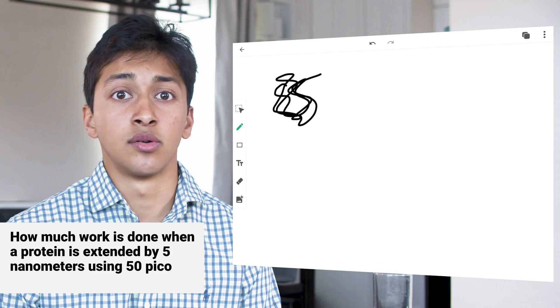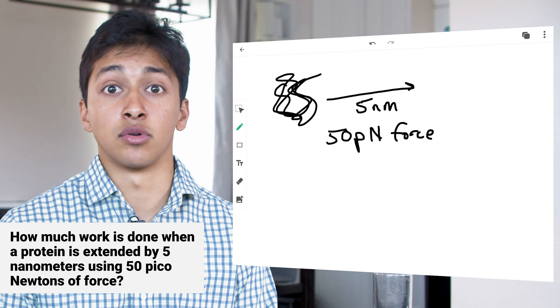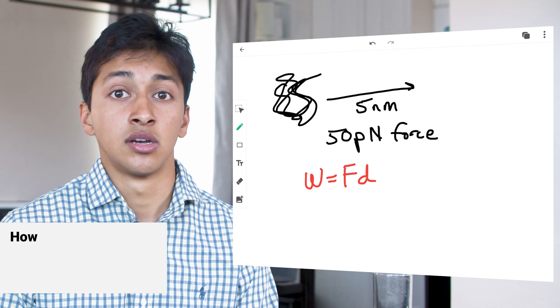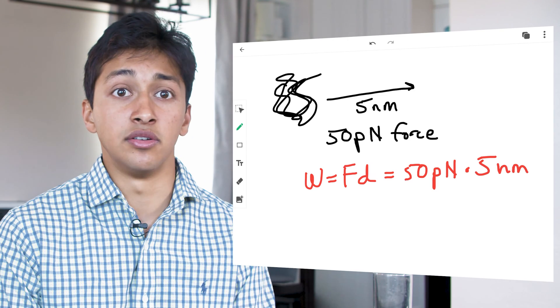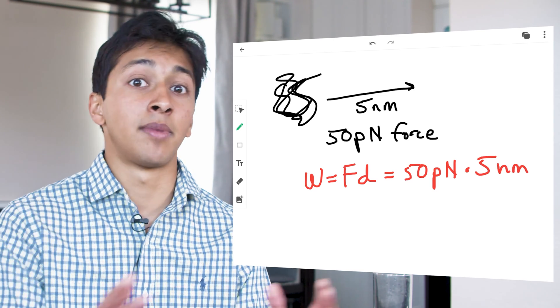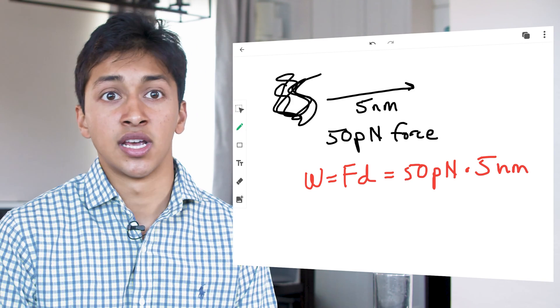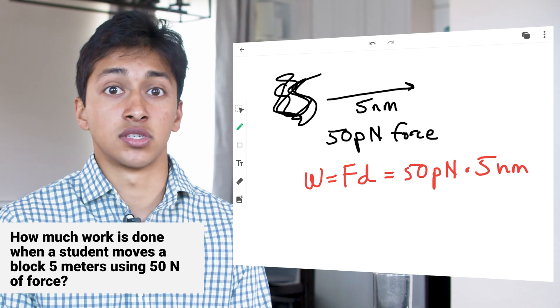How much work is done when a protein is extended by 5 nanometers using 50 piconewtons of force? If we know that the formula for work is work equals force times distance, we can solve this question by simply multiplying 5 nanometers by 50 piconewtons. A lot of students tend to panic when asked physics questions in a biological context. We are much more used to seeing the following question. How much work is done when a student moves a block 5 meters using 50 newtons of force?